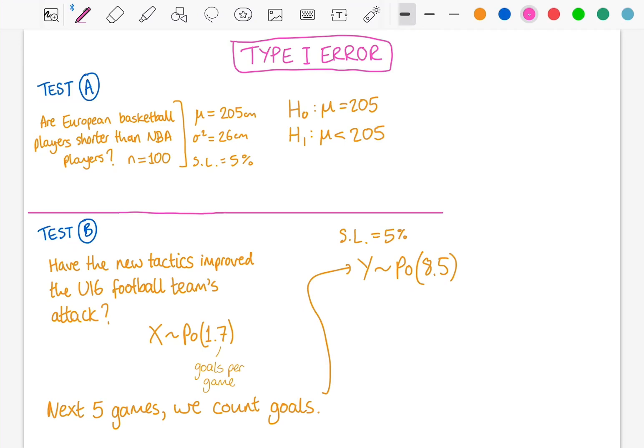And the alternate hypothesis is the opposite. It's the hypothesis that your sample doesn't fit in, that something has changed, that the claim that something is out of the ordinary has proven to be correct. Or at least we think.